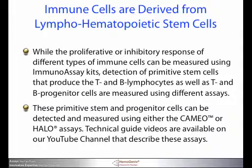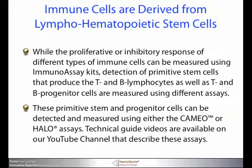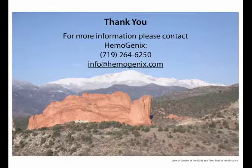You may also be interested in very primitive cells of the lymphopoietic system. While the proliferative or inhibitory response of different types of immune cells can be measured using immunoassay kits, detection of primitive stem cells that produce T and B lymphocytes, as well as T and B progenitor cells, are measured using different assays. These primitive stem and progenitor cells can be detected and measured using either the CAMEO or HALO assays. Technical guide videos are available on our YouTube channel that describe these assays. Thank you for your attention and we look forward to hearing from you.